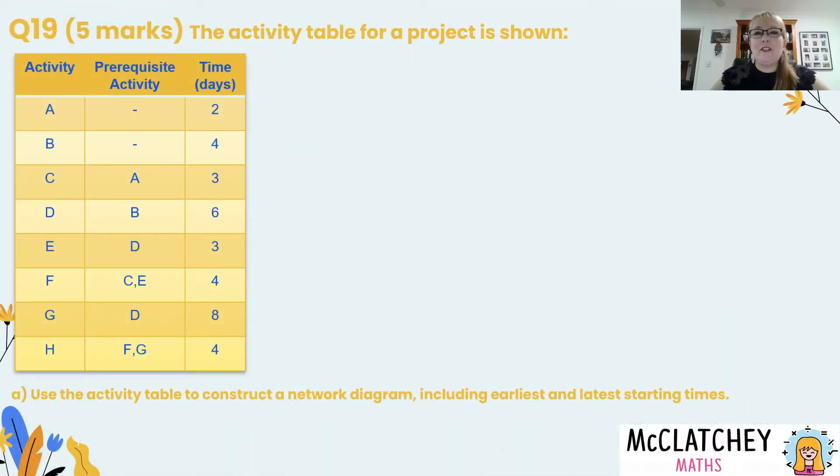Let's get straight into our very first question. It's question 19 worth five marks and we're given an activity table for a project. There's some different activities here, A, B, C, D, E, F, G and H. Some of those have prerequisite activities and they all have different durations in days.